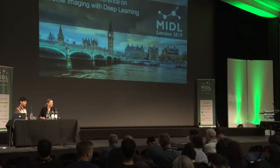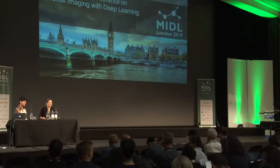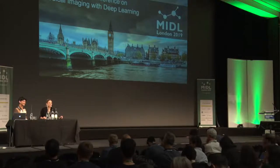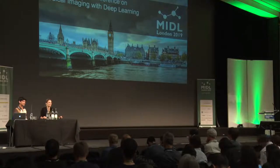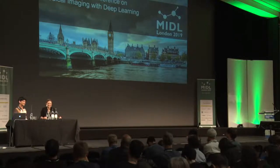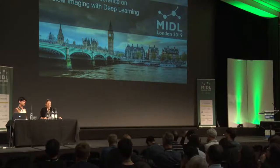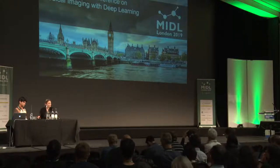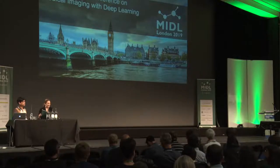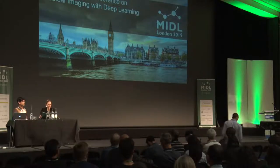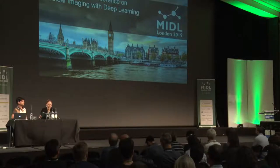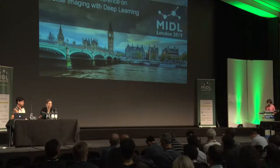Good afternoon, everyone. It's great to see you in lively debates. Although it's after lunchtime, I hope you keep on that energy for the questions after the talk. I'm Lena Meyer-Hein from Heidelberg, chairing this session with Herve Lombard from Canada. The session is on learning from unbalanced samples. It's my pleasure to introduce the first speaker, Carole Soudre, presenting the paper '3D Multirater RCNN for Multi-Modal Multi-Class Detection and Characterization of Extremely Small Objects.'